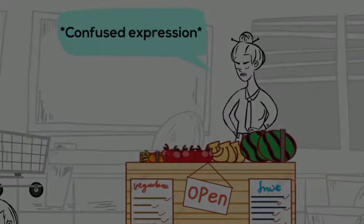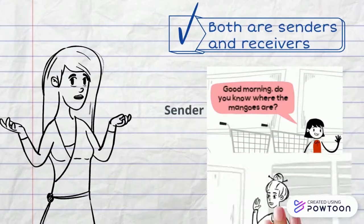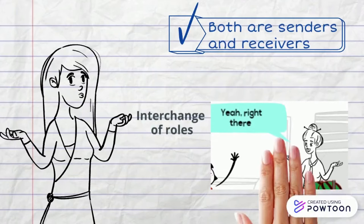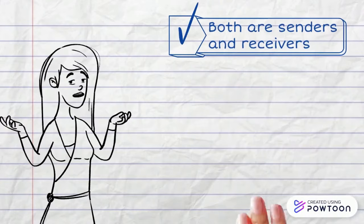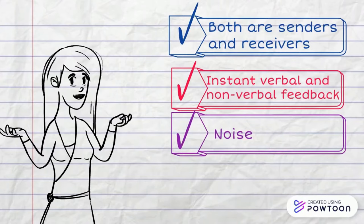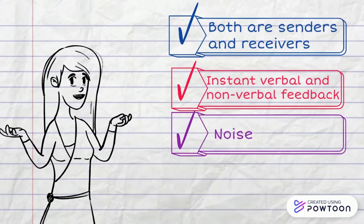First, the buyer acts as a sender and encodes a message. Then, the seller or receiver decodes the message. And the thing here with the transactional communication is that the receiver becomes a sender, so they interchange their roles. Each one of them gives instant verbal and non-verbal feedback. And finally, there can also be noise interfering with the conversation, like other people talking.